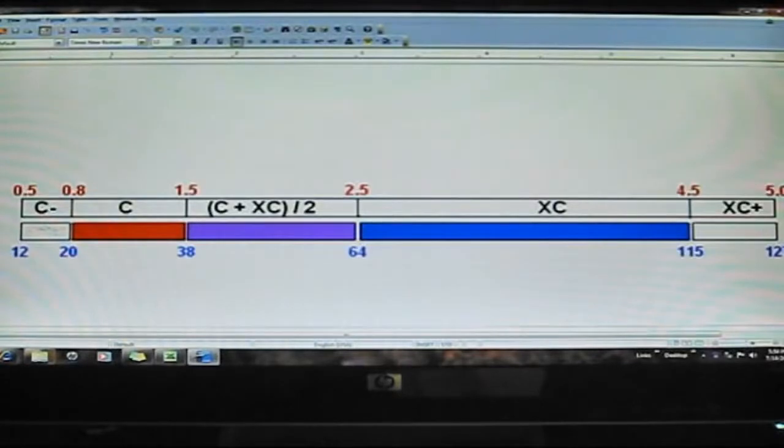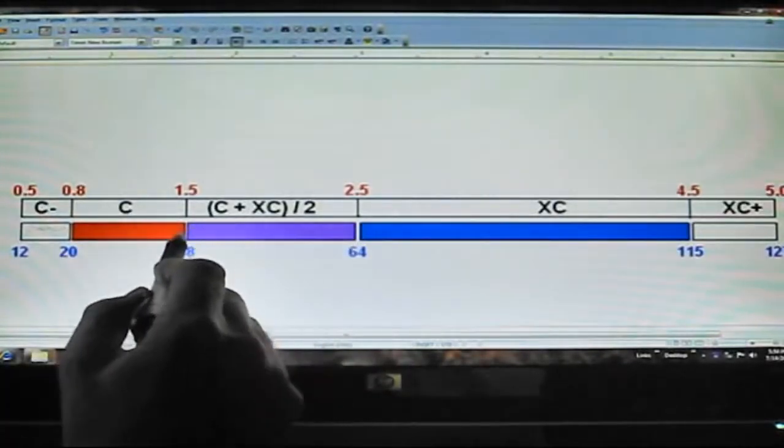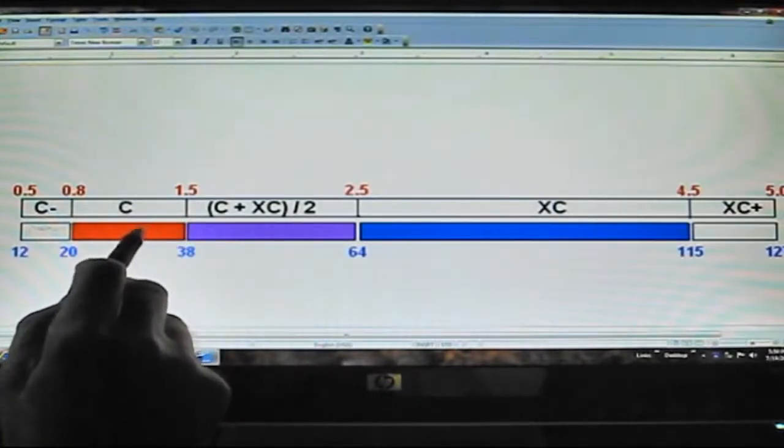If the second measurement had been outside the overlap window, say 1.4 mils or 36 micrometers, we would have written it down as the profile.